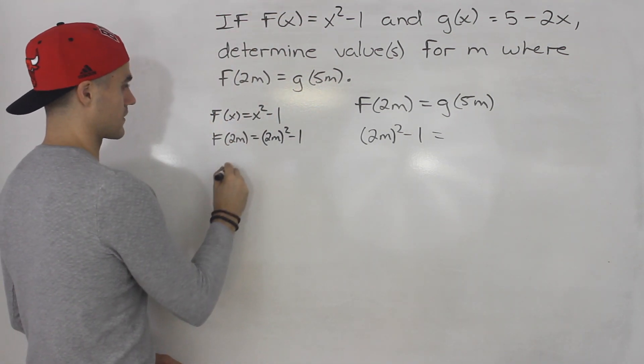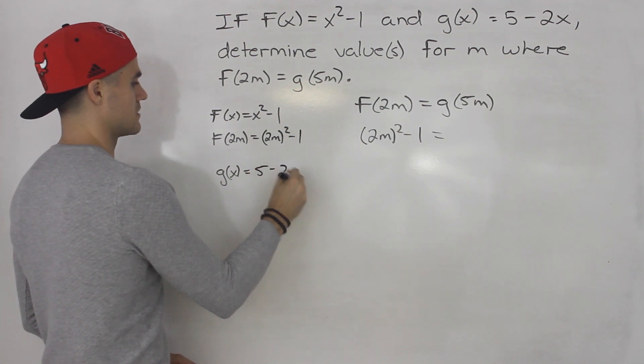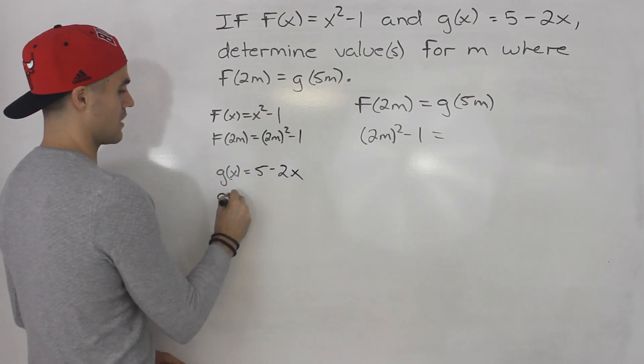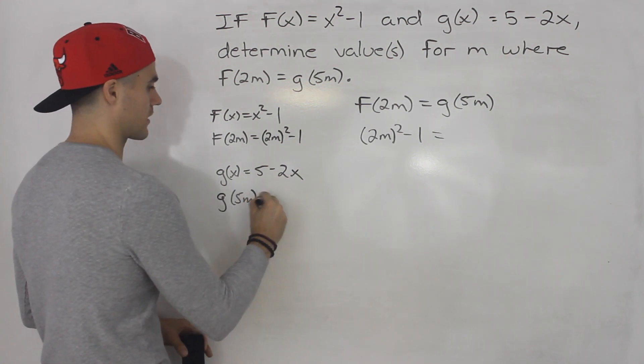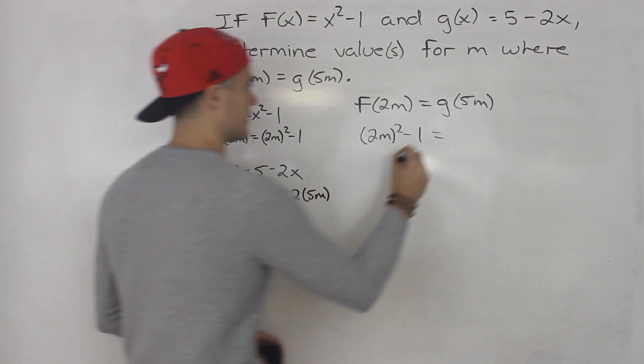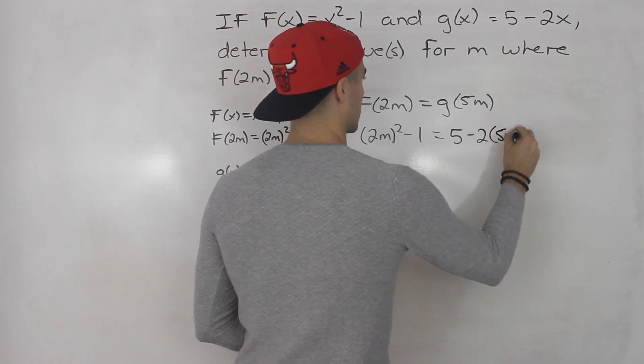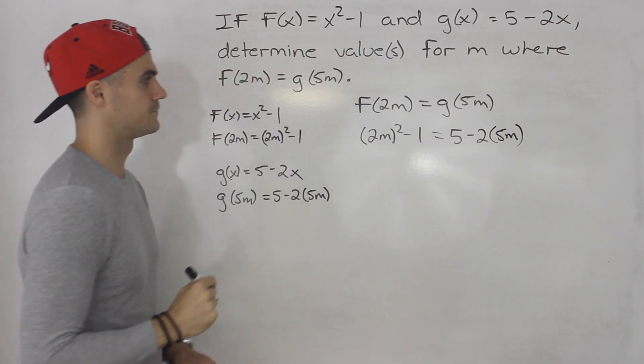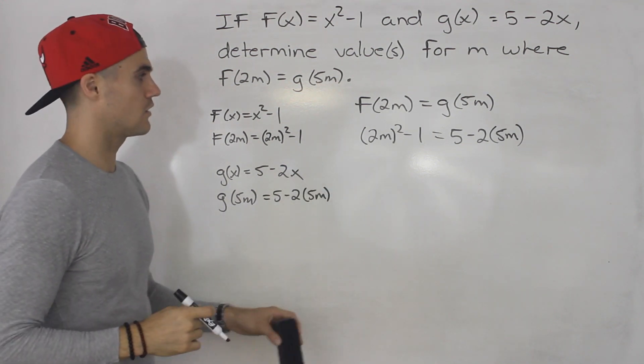And g(x) is given as 5 - 2x. So g(5m), we would plug in 5m for the x value, again in brackets. So 5 - 2(5m). Now notice we just have an equation to solve.